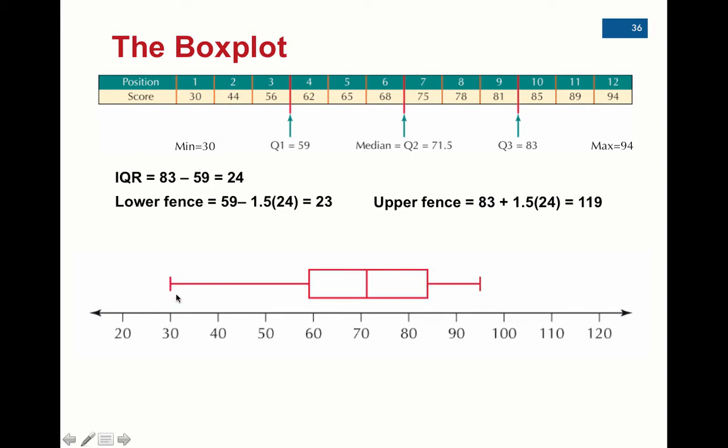We can see also that the min is 30, so the whisker on the left goes all the way to 30, and the whisker on the right goes all the way to 94.